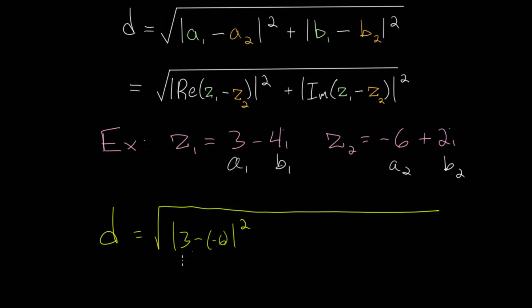We could switch this order. We can do the absolute value of minus 6 minus 3, and square that. And you'll notice in both cases, you get 9.